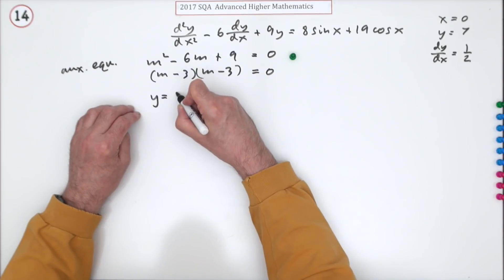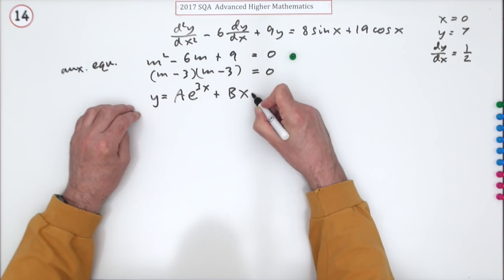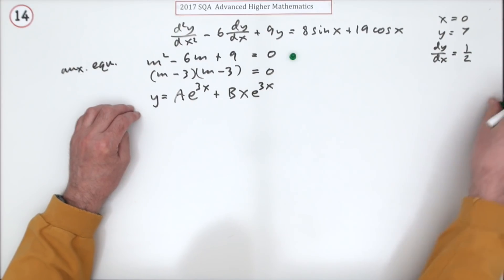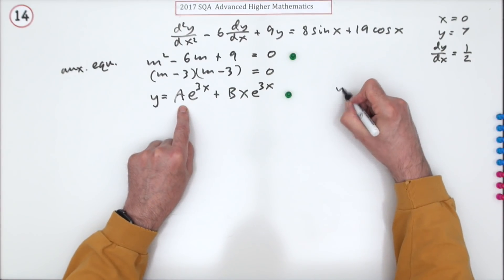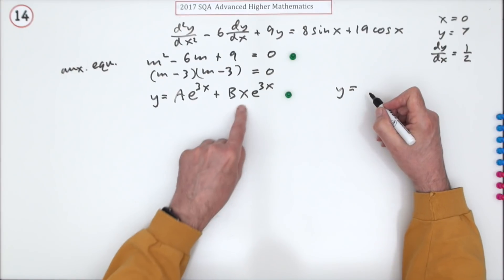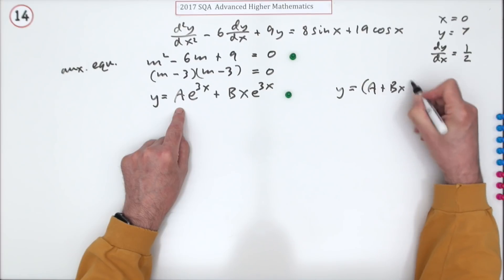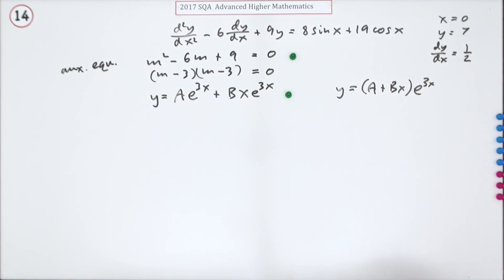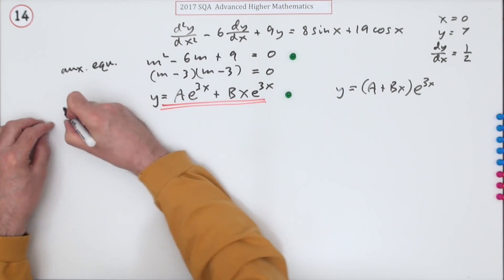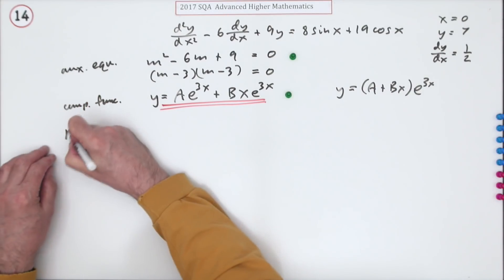So it'll be Ae^(3x) plus Bxe^(3x) for the second mark, or you could write that as y equals (A + Bx)e^(3x). That was the complementary function.